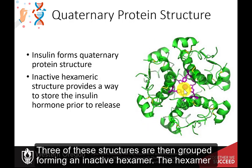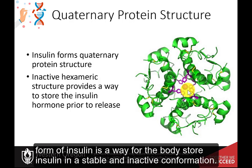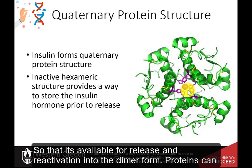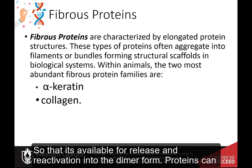Three of these structures are then grouped, forming an inactive hexamer. The hexamer form of insulin is a way for the body to store insulin in a stable and inactive conformation, so that it's available for release and reactivation into the dimer form.